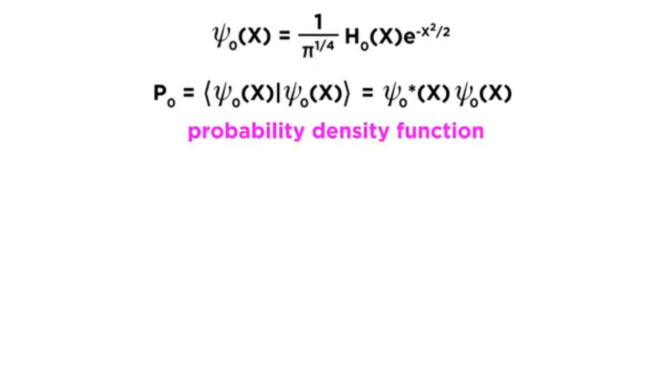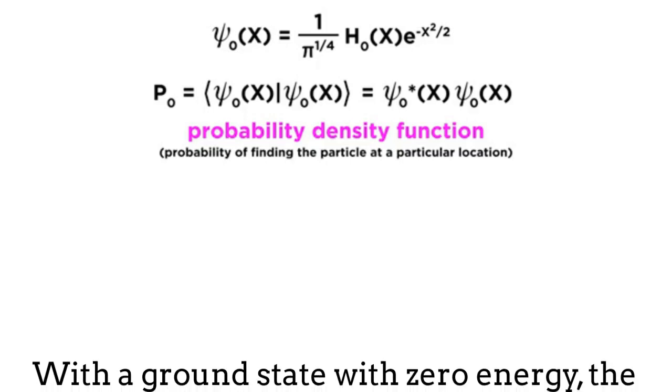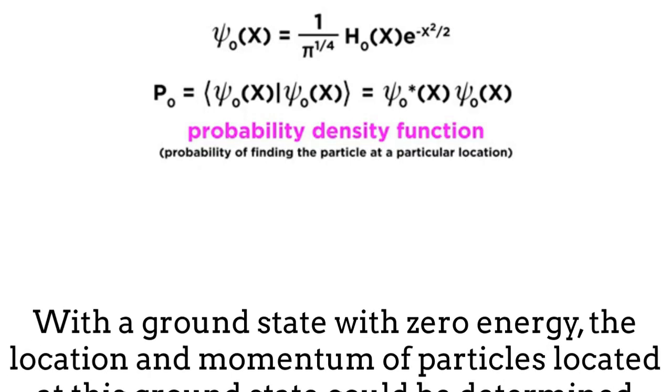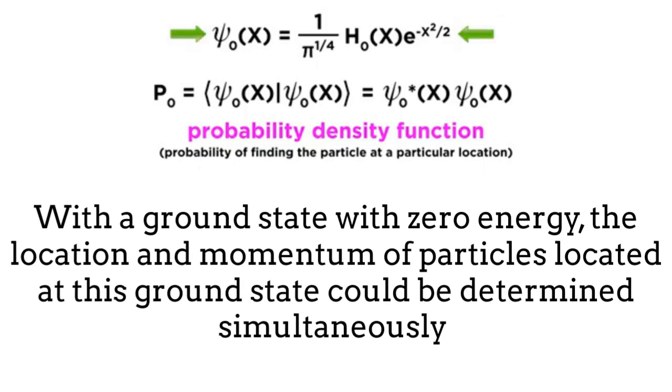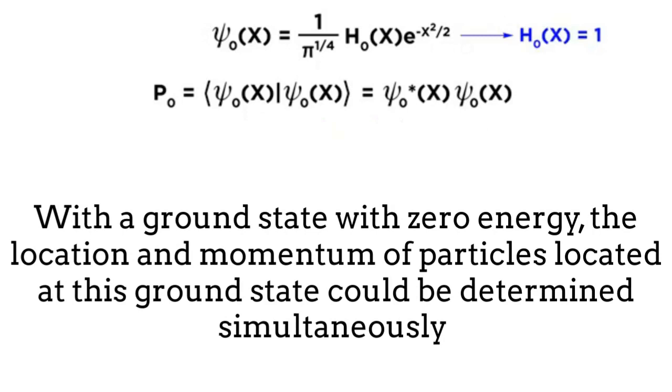if the ground state of the quantum harmonic oscillator were zero, then we would be able to know simultaneously the position and the momentum of a particle located in this state, under the influence of the harmonic oscillator potential. This is the case because this particle would be in an absolute repose in such a case.